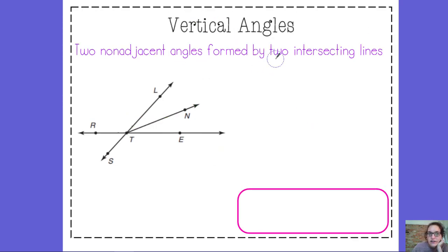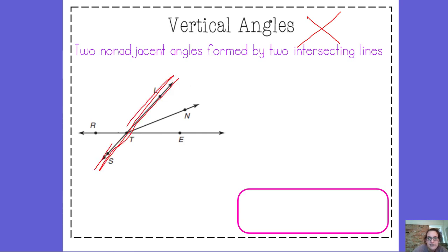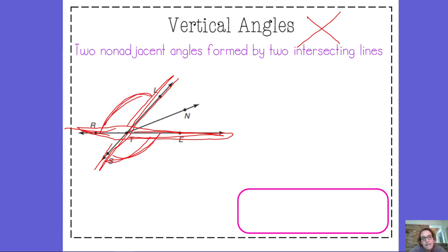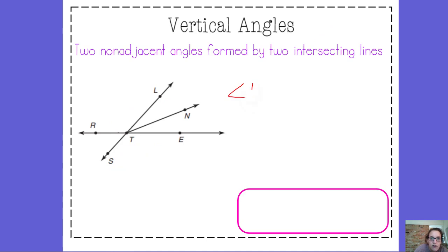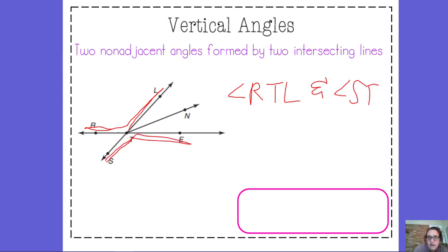Next: vertical angles. Vertical angles are two non-adjacent angles — so they don't touch — formed by two intersecting lines. Look for an X with vertical angles. Here's a line SL and here's a line RE, and the two angles formed by those intersecting lines are vertical angles. So angle RTL and angle STE are vertical angles — they are formed by two intersecting lines, they have the same vertex, but they're not adjacent, so they don't share a side.